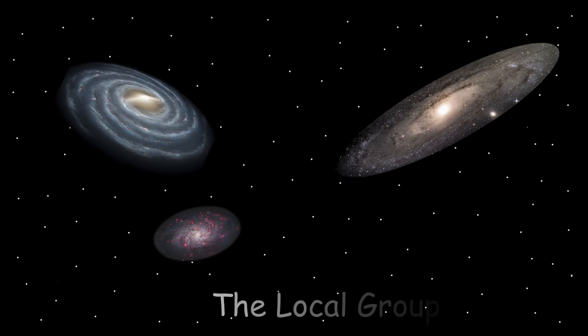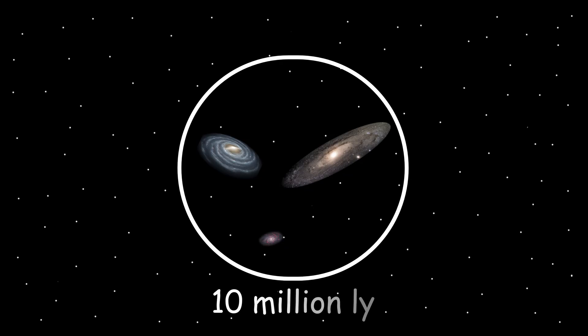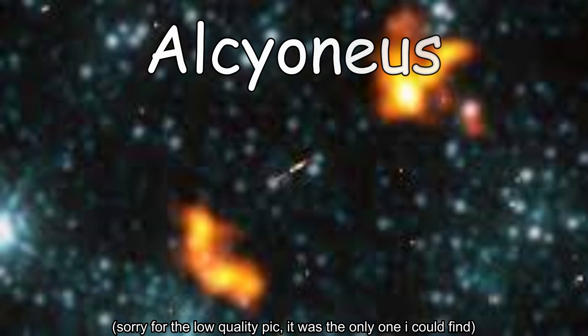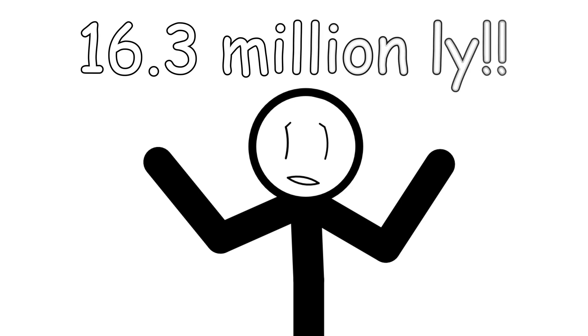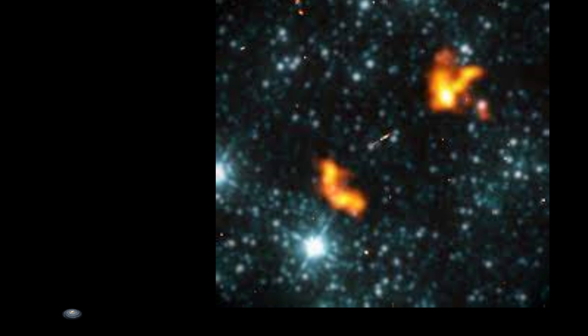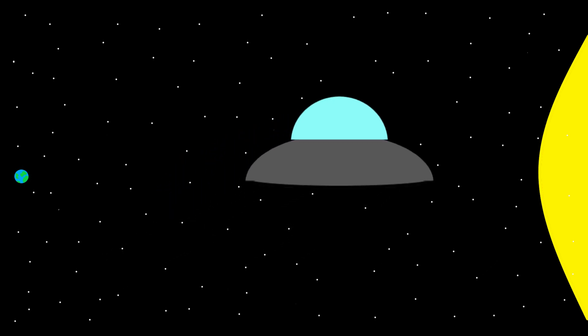The next step up is the local group, consisting of our galaxy and about 30 others. This has a diameter of about 10 million light years, so about 100 Milky Ways. The size of the largest known galaxy, Alconus, if that's how you pronounce it, is 16.3 million light years long, dwarfing our galaxy which is 100,000 light years across. I'll do the maths for you. That's 163 times bigger than our galaxy. It's sci-fi level stuff.